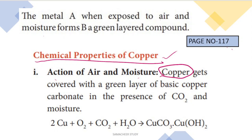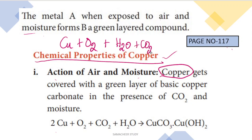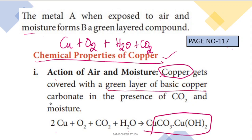Copper reacts with air and moisture: Cu plus O2 plus H2O plus CO2 — because air and moisture contain O2, CO2, and H2O. This reaction forms a green layer of basic copper carbonate. You can find this on page 117 of your book.